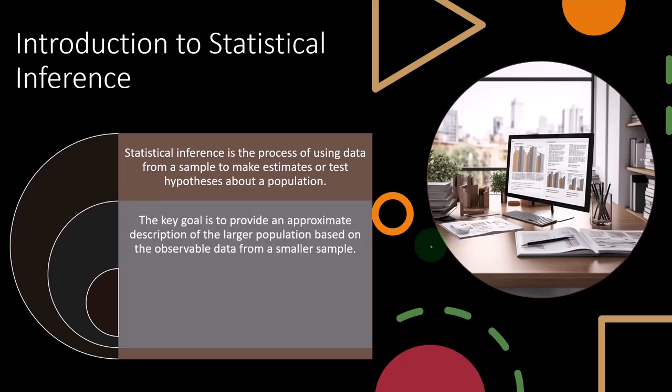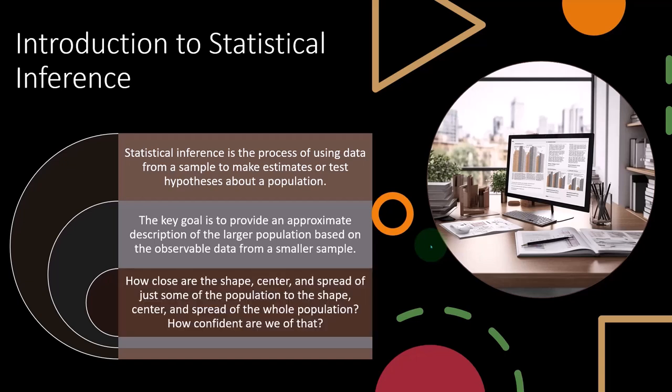So the key goal is to provide an approximate description of the larger population based on the observable data from a smaller sample. The small sample, it's not our goal to just know everything about the small sample. We want to know information about the small sample so that we can infer that to the larger population.